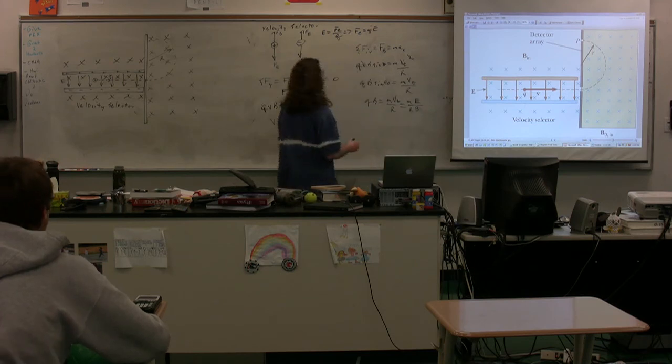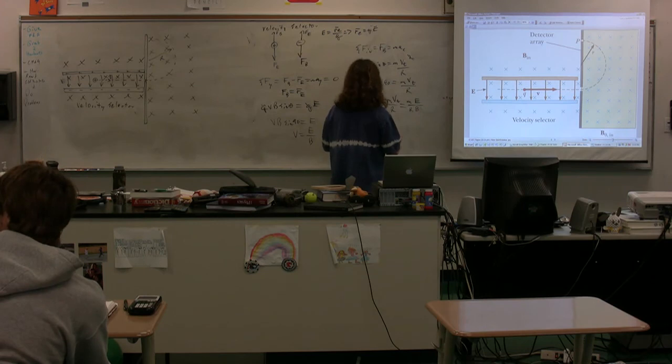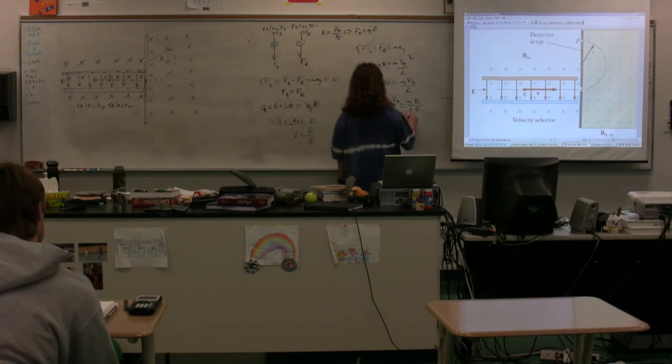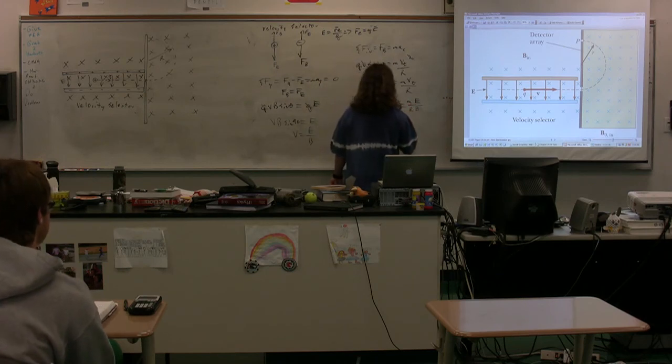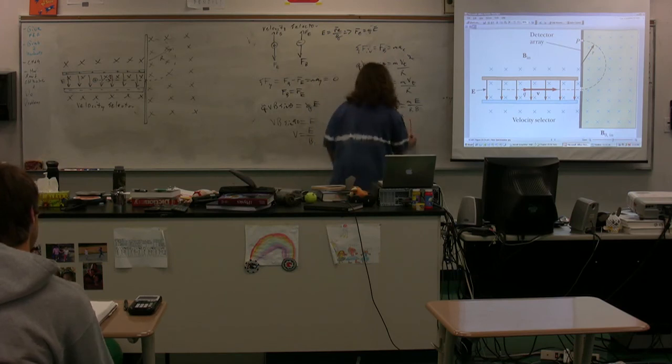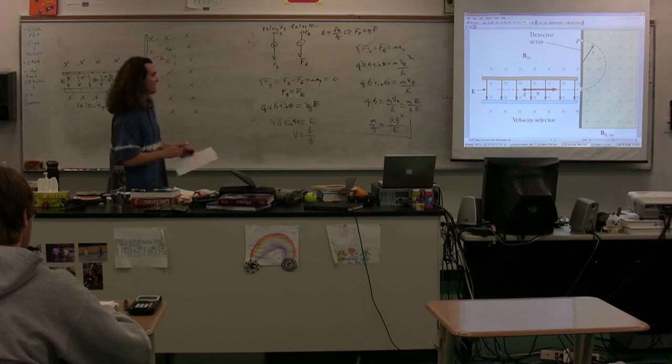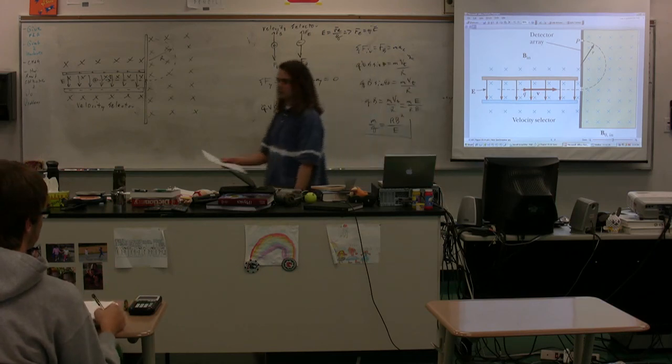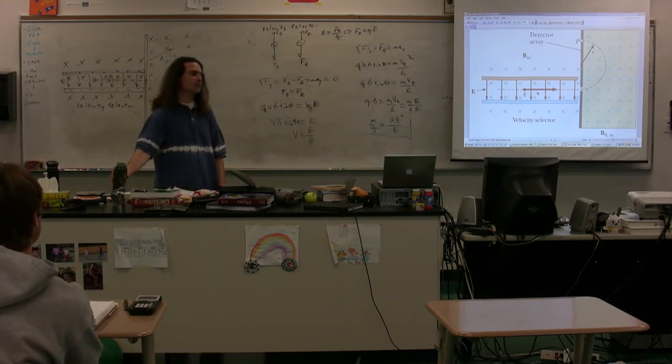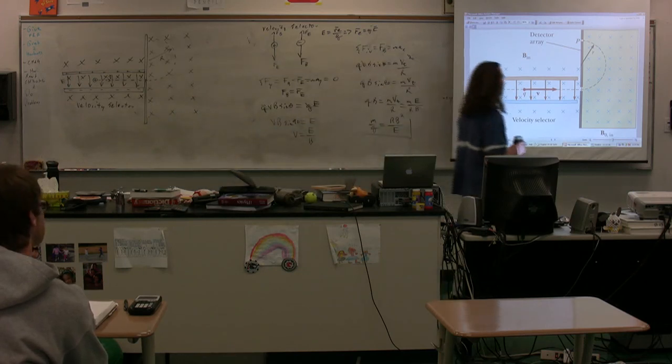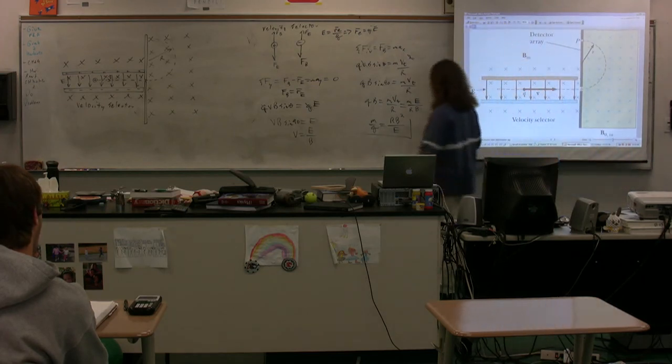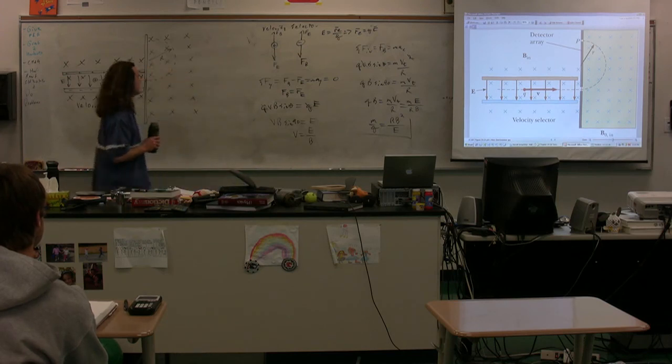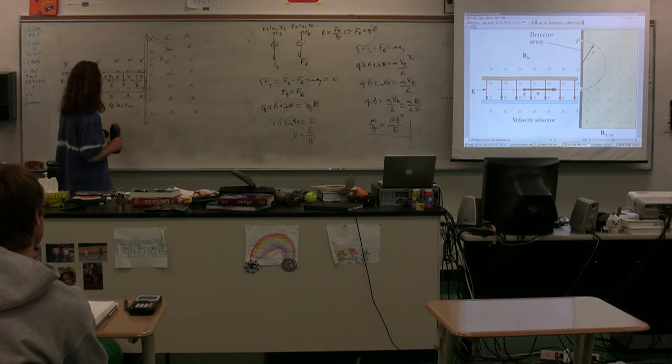In other words, let's see. We can solve for whatever we want here. We can solve for, usually we end up solving for something called the mass to charge ratio, which is equal to, if we solve this, we get RB squared divided by the electric field. We can solve for all sorts of things, but that is generally, that's where it was originally performed to figure out the mass to charge ratio of various charges. Then you could also figure out whether it's positive or negative, depending on which way it goes in the detector array, whether it goes up or down. You could figure out using all sorts of things. You can see exactly what we got out of this. Now, do notice that this assumes that the magnetic field in the detector array and the velocity selector are the same, which is not necessarily the case.